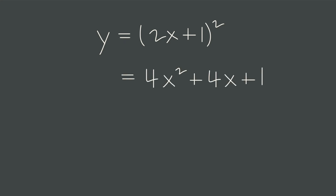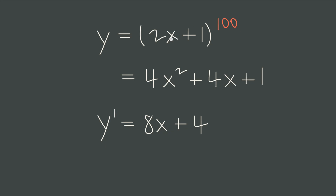Differentiating is straightforward if we expand this equation first. We get 4x squared plus 4x plus 1, and then the derivative is easy to find as 8x plus 4. But what if it was this instead — quantity 2x plus 1 to the power of 100? Suddenly expanding is impossible. We need a rule for functions nested inside of other functions, and that's the chain rule.